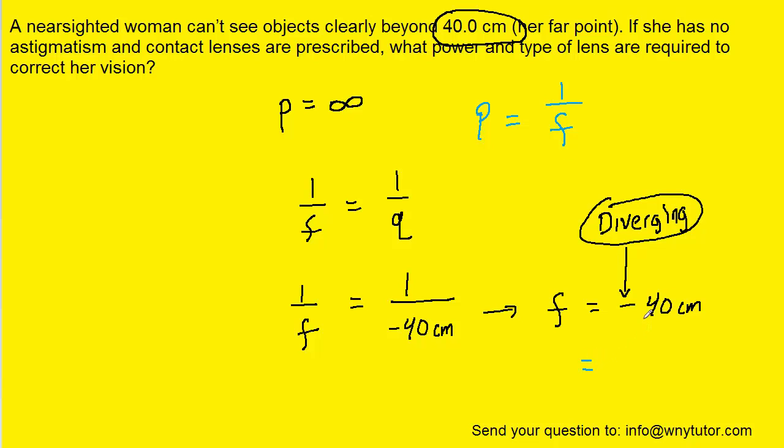So we said that the focal length was negative 40 centimeters. That is equivalent to negative 0.40 meters. So as long as we do that adjustment, we can go ahead and plug in for the power.